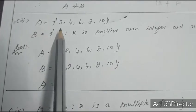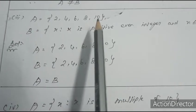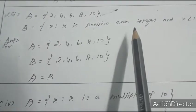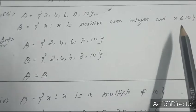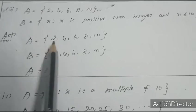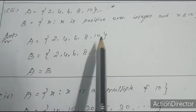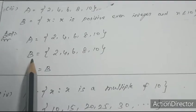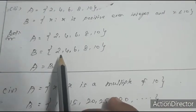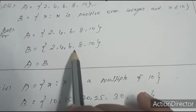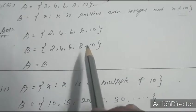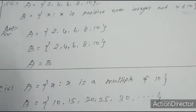Third: A = {2, 4, 6, 8, 10} and B = {x : x is a positive even integer, x ≤ 10}. B = positive even integers ≤ 10 = {2, 4, 6, 8, 10}, and since 10 is included. Therefore A = B.